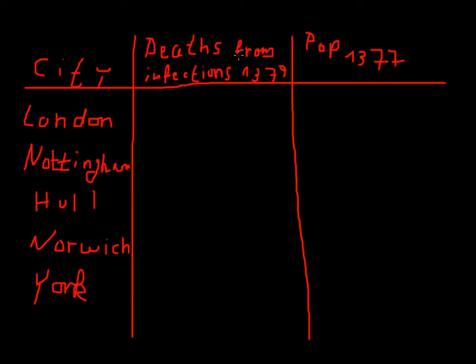We put in deaths from infections in 1377. By the way, this is completely made up, or at least the numbers for the deaths from infections in 1377 are completely made up. So let's say 230 in London, in Nottingham let's say 39, in Hull let's say 41.